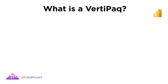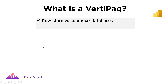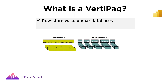Let's start with a simple question: what is VertiPaq? Before we come to answer this question, we should mark the line between row store versus columnar databases. VertiPaq is a columnar database. As you can see in this illustration, columnar databases store and compress data in a whole different way compared to traditional row store databases.